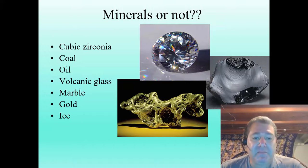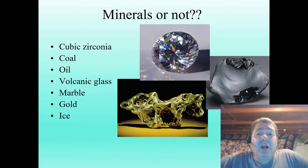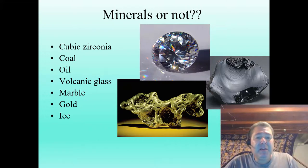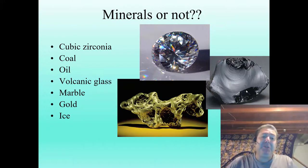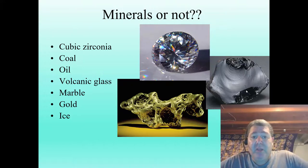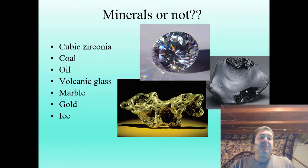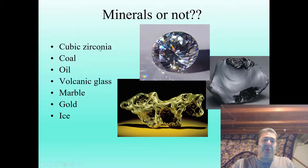Ice — now we must qualify this statement. Are you talking about ice on a lake, or ice in your freezer? Because the answer is different. Ice on a lake is a mineral, because it is naturally occurring. Ice in your freezer is not, because you made it. It seems like a superfluous difference, but you don't want to pay real diamond prices for cubic zirconia.